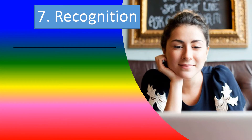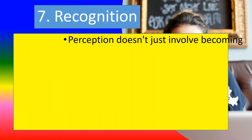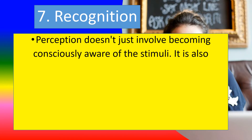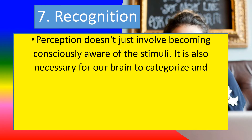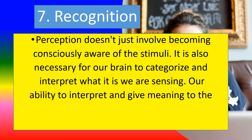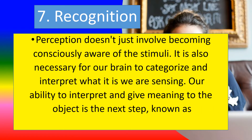Seven, recognition. Perception does not just involve becoming consciously aware of the stimuli. It is also necessary for our brain to categorize and interpret what it is we are sensing. Our ability to interpret and give meaning to the object is the next step, known as recognition.